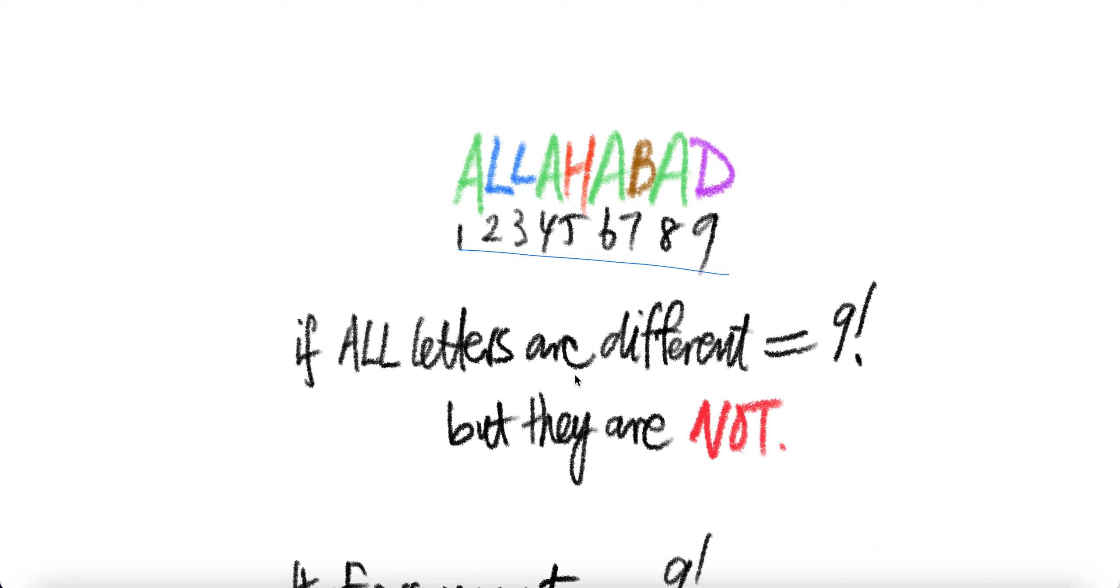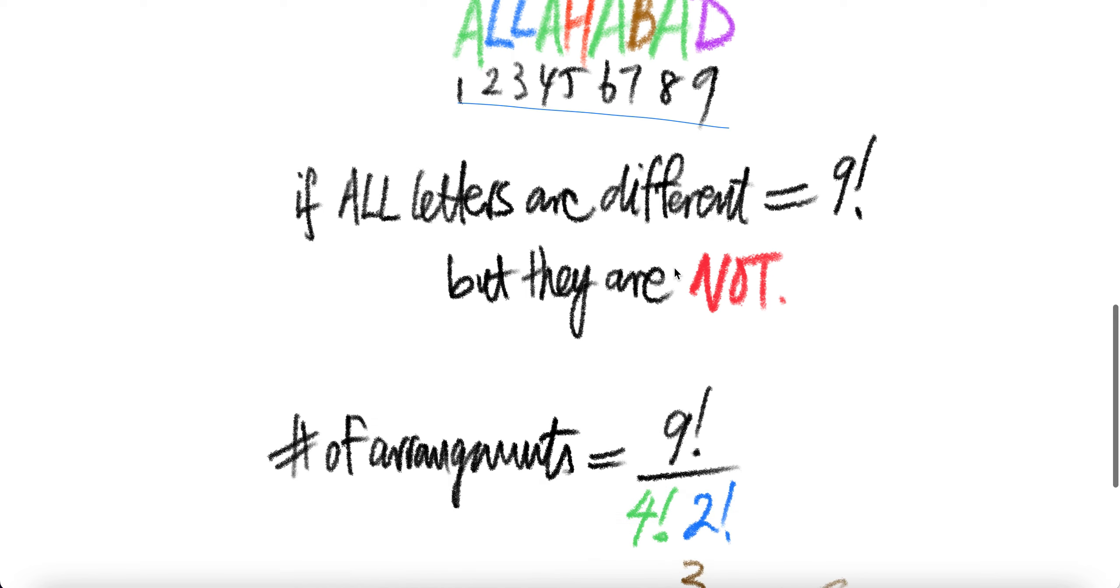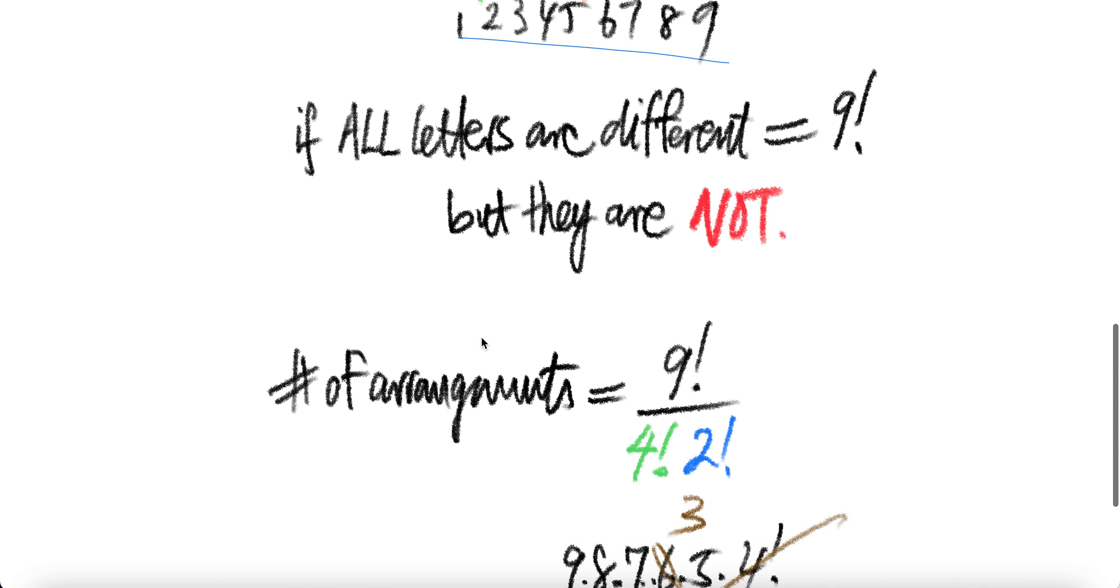But they are not all different. For example, A occurs four times, L occurs two times, and the rest appear once. Therefore,